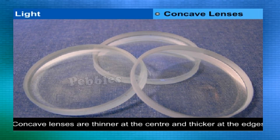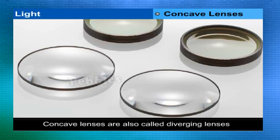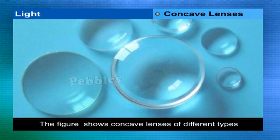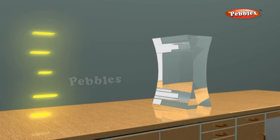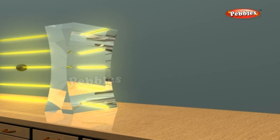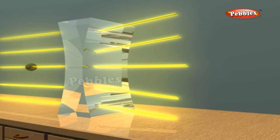Concave lenses are thinner at the center and thicker at the edges. Rays of light passing through a concave lens appear to diverge from a point, so concave lenses are also called diverging lenses. All objects appear smaller when seen through a concave lens. If a beam of light parallel to the principal axis is passed through a concave lens, it diverges and the rays appear to come from a point F on the principal axis — this point is the focus of the concave lens.